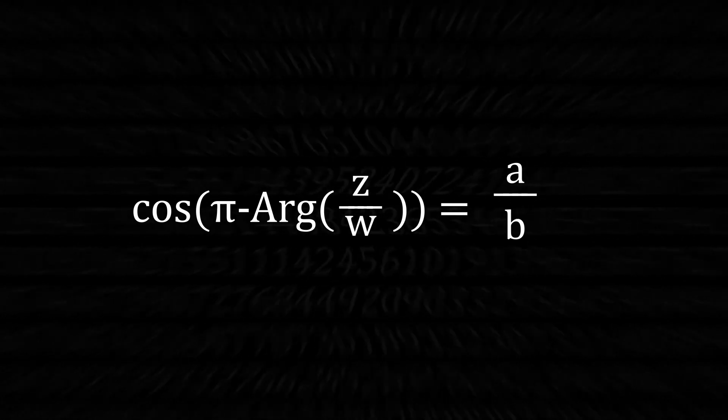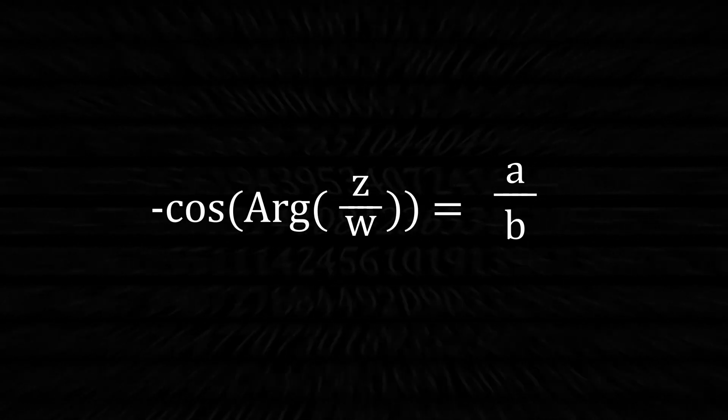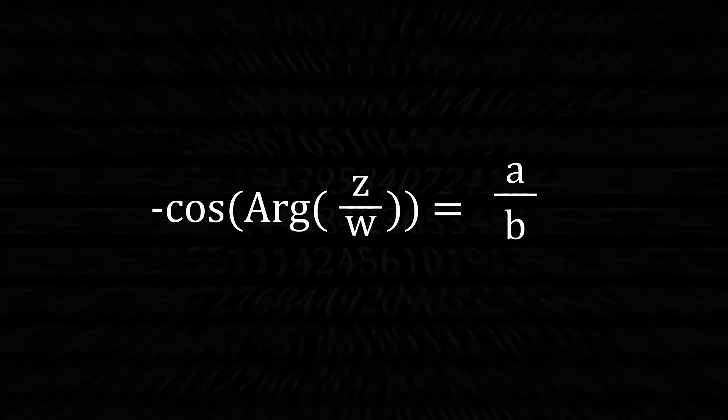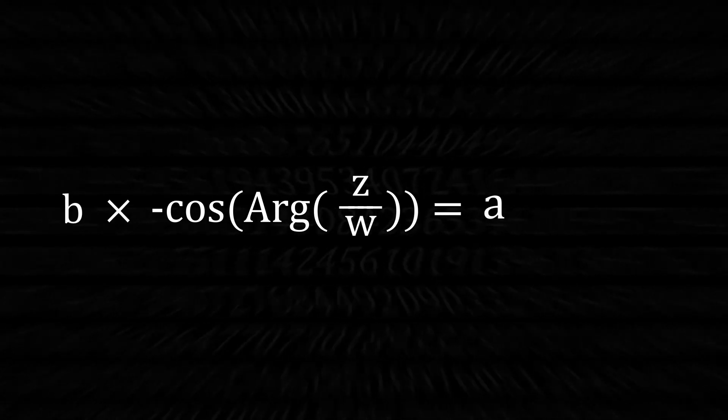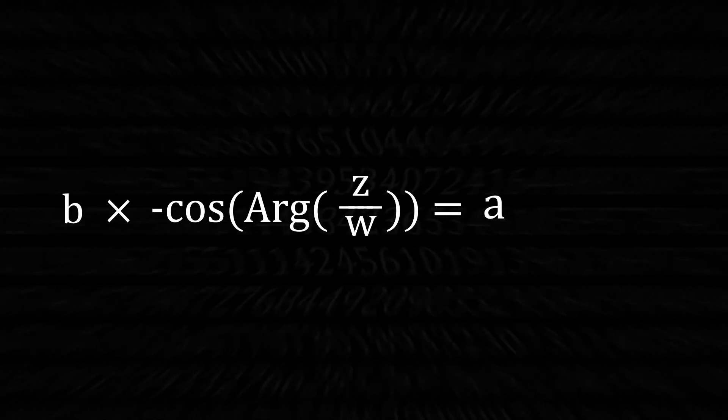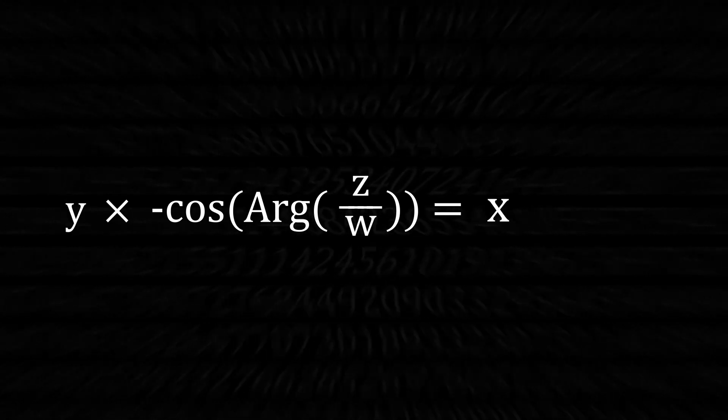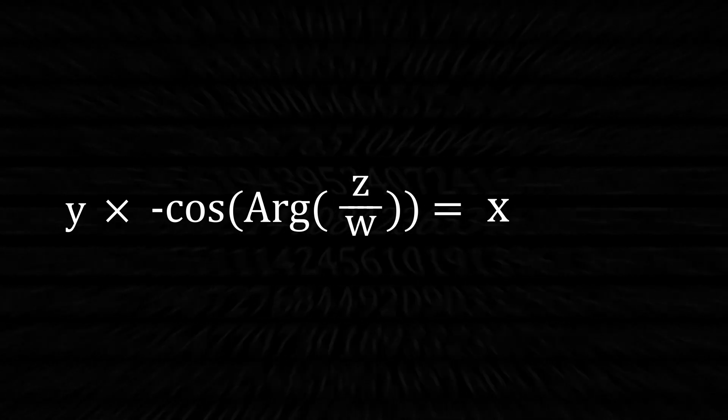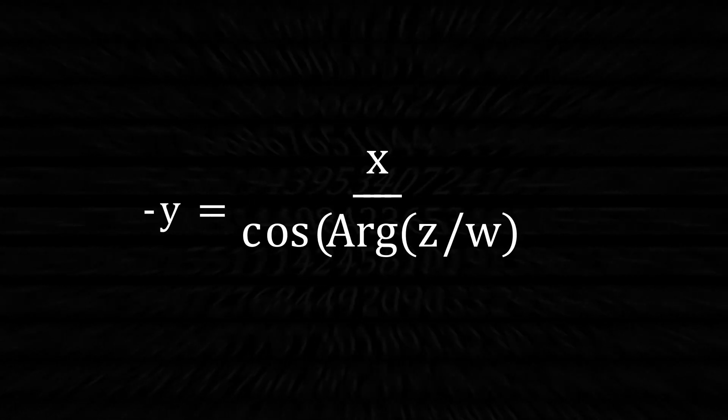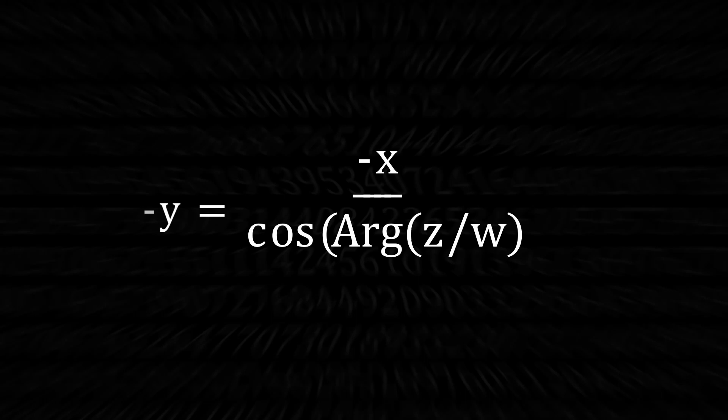Using cosine rules, we can remove the pi and make it negative. Let's multiply both sides by b. Finally, we have no use for a and b anymore, so we can just substitute x and y. Divide both sides by the cosine statement and multiply both sides by negative 1.